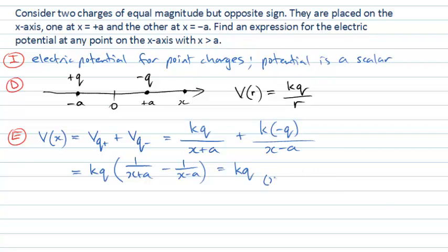In this case we can put that over x plus a times x minus a. For that first term we're going to need to multiply by x minus a to get this common denominator, and the second one here by minus x plus a.